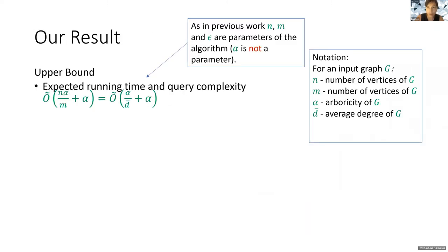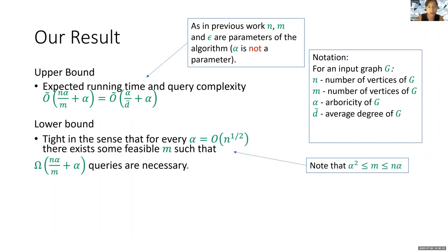We studied the problem of testing triangle-freeness in terms of the arboricity of the graph alpha, and we show an upper bound with expected running time and query complexity which is Õ(α/d̄ + α), where n denotes the number of vertices, m denotes the number of edges, alpha denotes the arboricity, and d̄ denotes the average degree. As in previous work, n, m, and epsilon are parameters of the problem, but alpha is not. Our algorithm runs in expected time that depends on the arboricity alpha although it does not receive alpha as a parameter. We show this result is in some sense tight for graphs of arboricity O(√n).